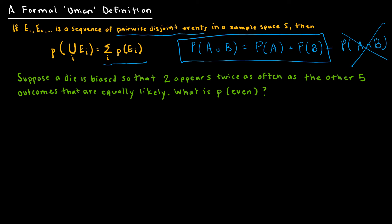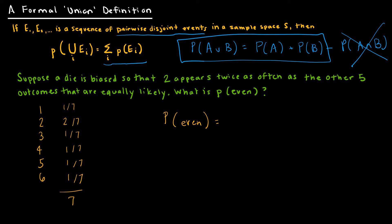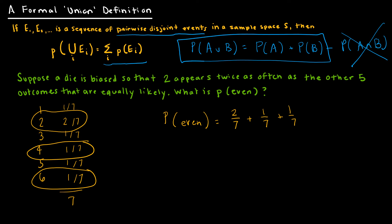Suppose a die is biased so that 2 appears twice as often as the other 5 outcomes. The outcomes are 1, 2, 3, 4, 5, 6. Since 2 appears twice and the others once each, there are 7 total weighted outcomes, so each non-2 outcome has probability 1/7 and 2 has probability 2/7. To find the probability of rolling an even number, we add the probabilities of 2, 4, and 6: 2/7 + 1/7 + 1/7 = 4/7.